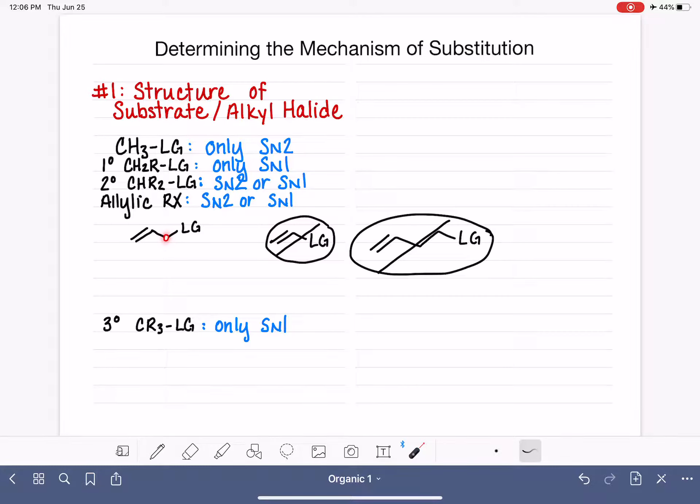It has to be exactly one carbon in between the leaving group and the double bond. So allylic, even though this particular allylic is a primary carbon, it's stabilized by resonance, and it's capable of doing either SN1 or SN2.